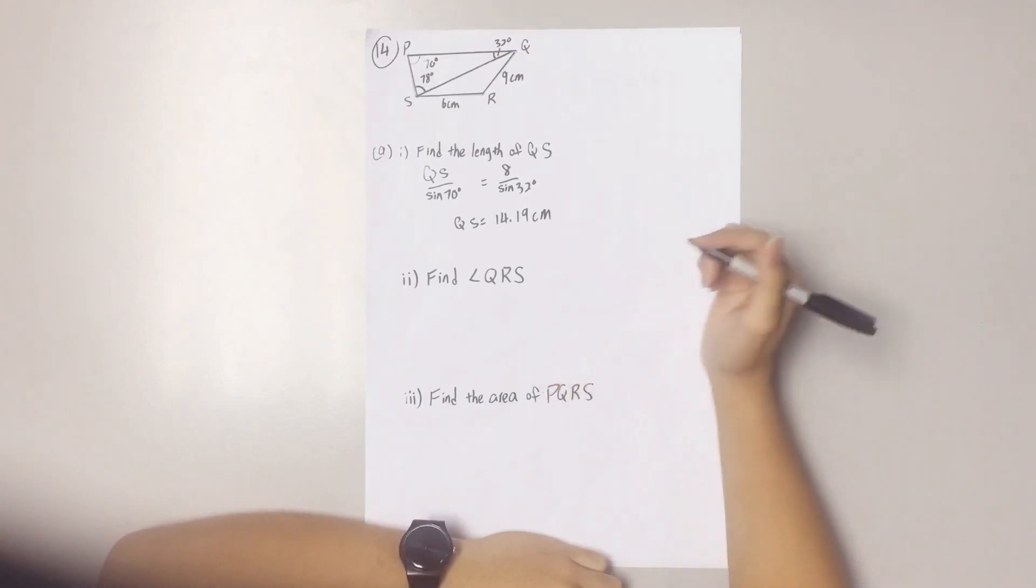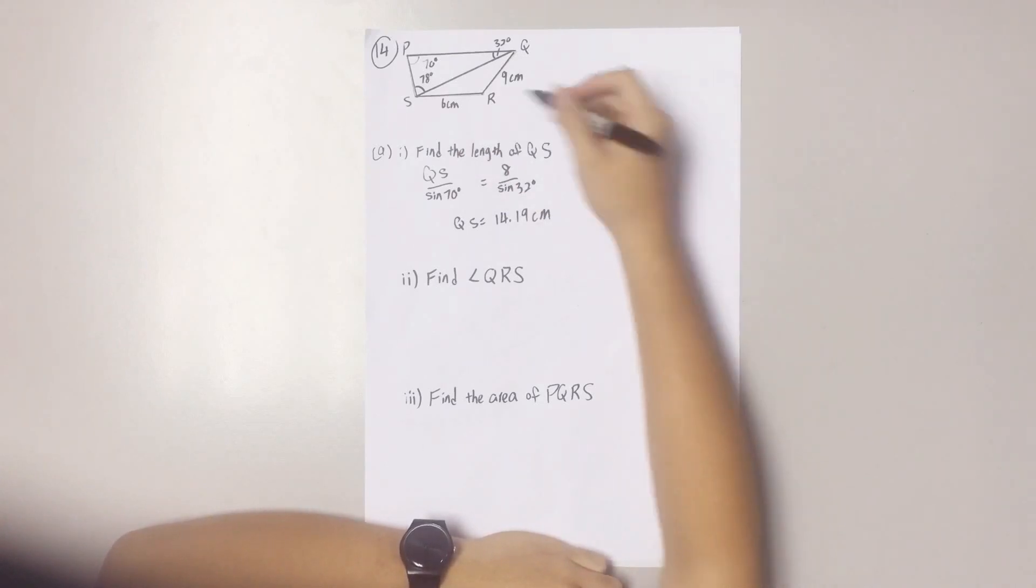Now let's go to Question 2. Find the angle of QRS. This angle right here.